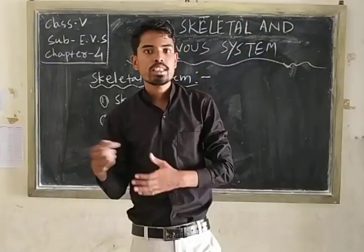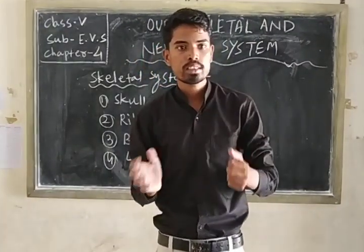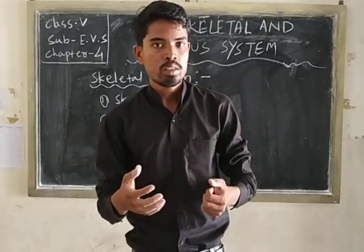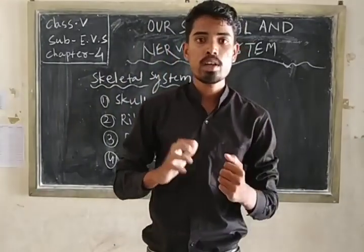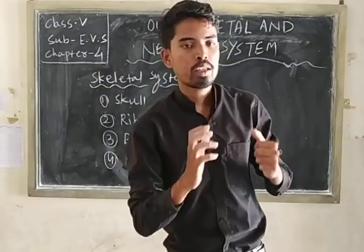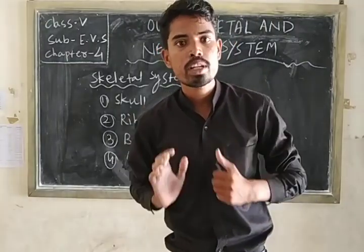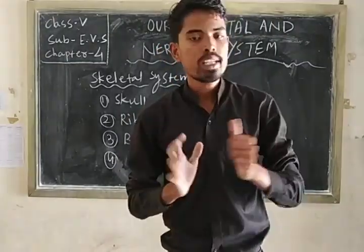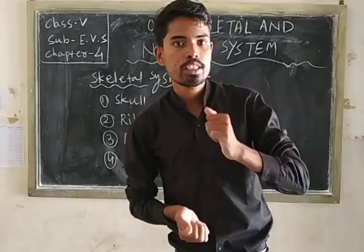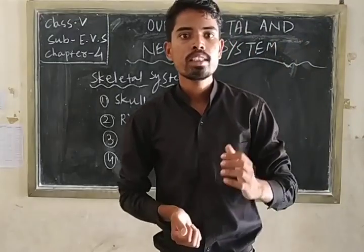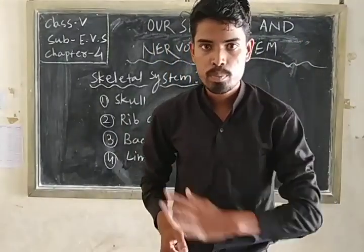The nervous system carries information from our body to the brain. The brain mainly controls our body system and different body parts. The nervous system includes nerve cells, which carry information to the brain, and the brain brings information back to the body parts.